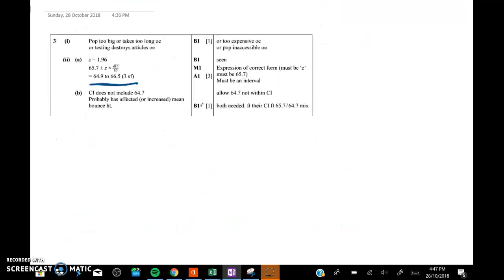You can see this is our confidence interval for three marks, and then we have to say a couple of things. We have to say the confidence interval doesn't have 64.7 and the mean bounce height has probably gone up. So that's pretty loose—I'm slightly looser than how I wrote it, but that seems to be fine.